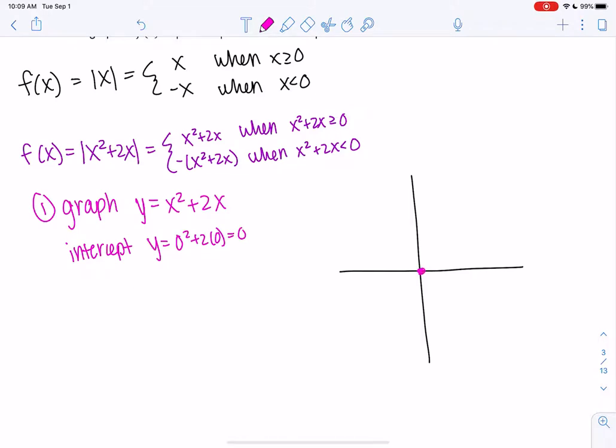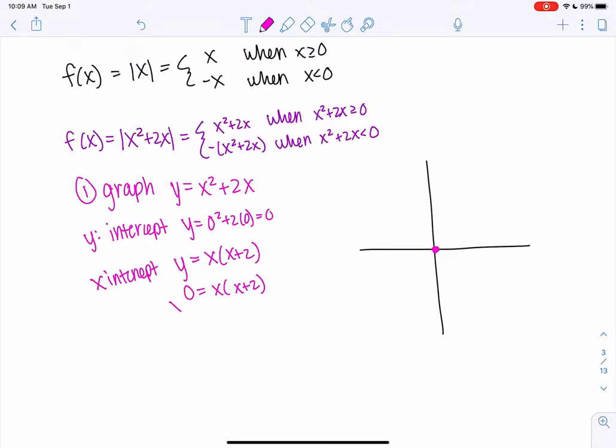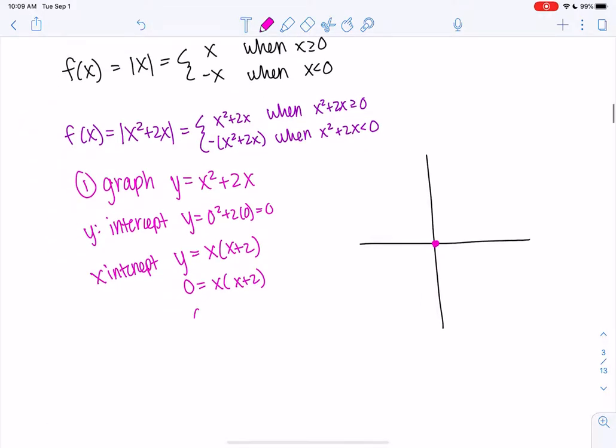We need to know maybe an intercept. We could plug in 0. So that would be 0, 0. And we could factor y equals x times x plus 2. And so then we could solve for the x-intercepts by plugging in 0 for y. So it looks like we get 0 and negative 2, which we already found 0, 0. So 0, 0, and negative 2, 0.